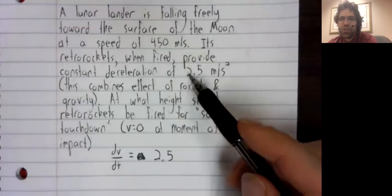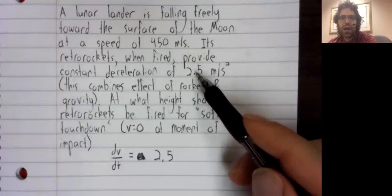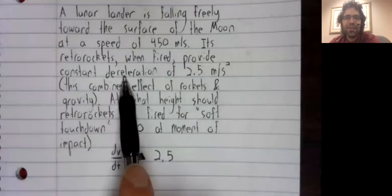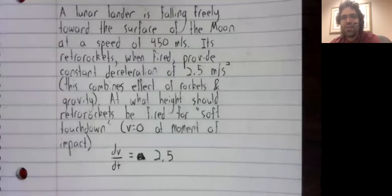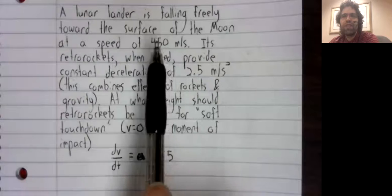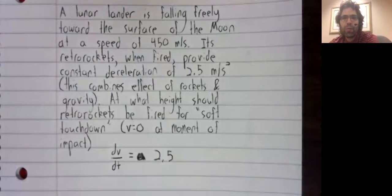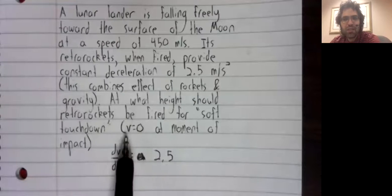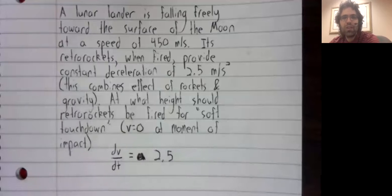A acceleration is 2.5, positive 2.5, which might initially be a little confusing. I mean, I used the word decelerate here. The key to making sense of this is that although the speed is 450 meters per second, the velocity is negative 450 meters per second. And if the velocity is going from negative 450 meters per second up to zero, the velocity is increasing. And if the velocity is increasing, acceleration is positive.